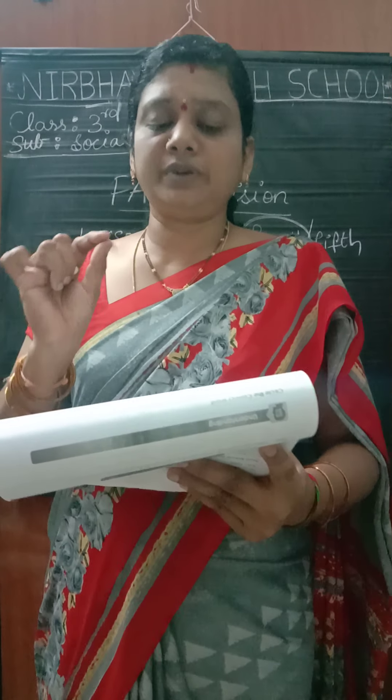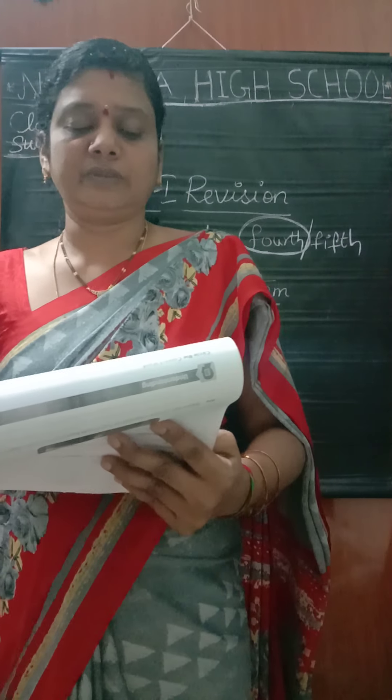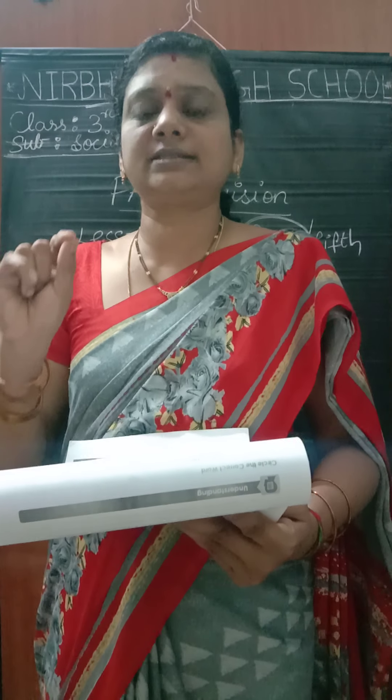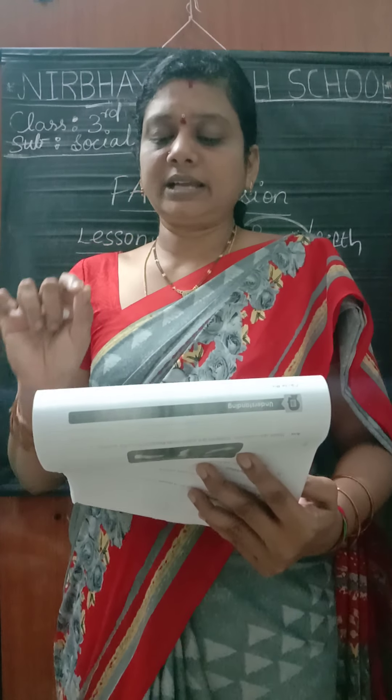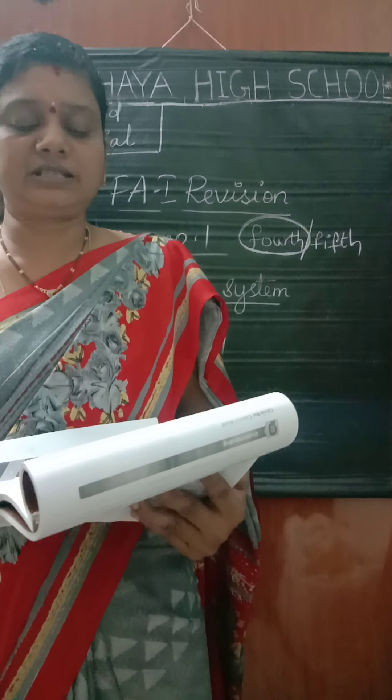Short answer question: Why is Venus the hottest planet in our solar system? Venus is the hottest planet in our solar system because its atmosphere traps the heat of the sun. It traps the heat of the sun.